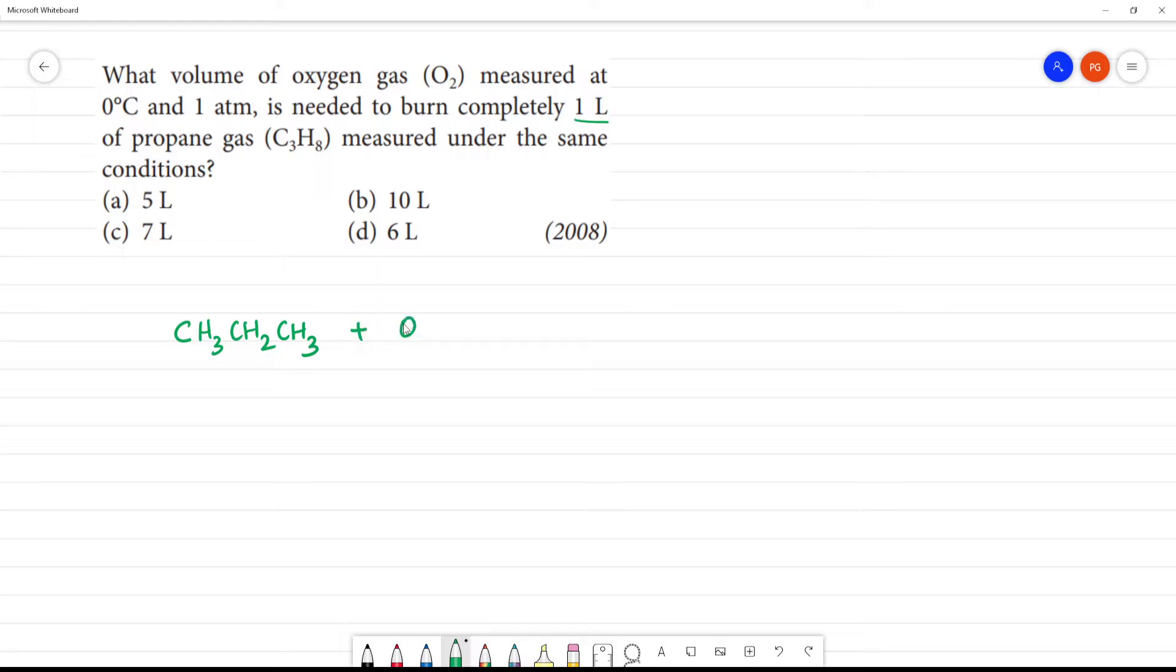We write the combustion equation. Burn completely means we use all molecules to form carbon dioxide plus water.